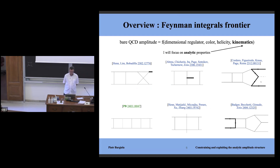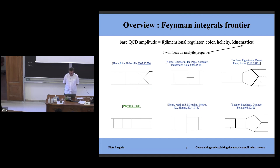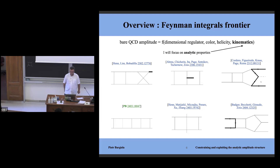For amplitudes, we need dimensionally regulated Feynman integrals — all those 1/ε poles must be under control. We focus on this Feynman integral structure because it drives the analytic properties of the amplitude. Results currently available at the Feynman integral level (not yet promoted to scattering amplitudes) include non-planar results at three-loop four-point with one mass, and many studies on five-point with multiple masses at two loops, as well as the six-point case.